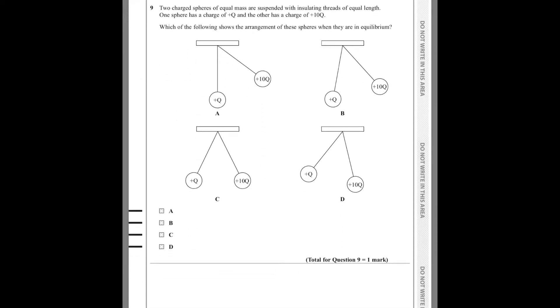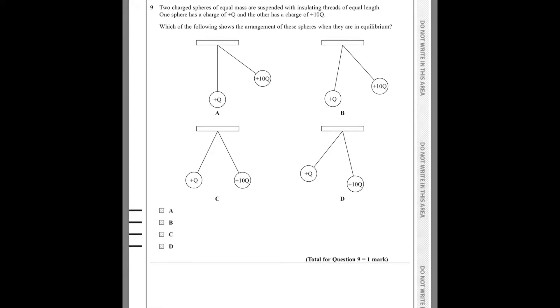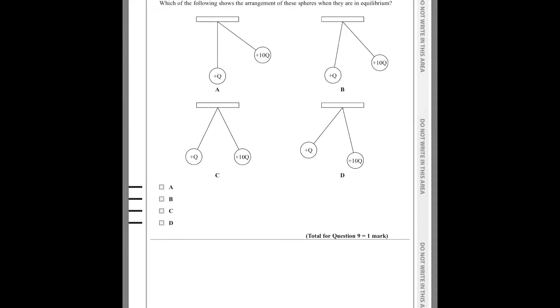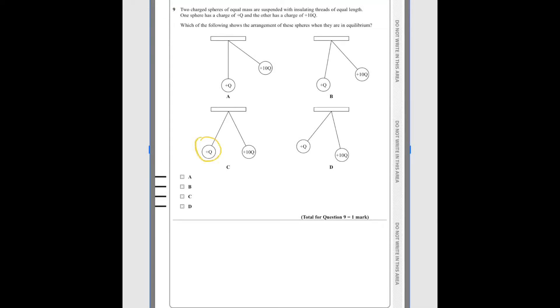Number 9: two charged spheres of equal mass are suspended with insulating thread of equal length. One sphere has a charge of plus q and the other has a charge of plus 10q. Which of the following shows arrangement of the spheres when they are in equilibrium? This is a type of trick question. According to Newton's third law, the two objects will exert equal and opposite force. So whatever the charge is, the distance from the center will always be the same. As I have told, this is according to Newton's third law. So the answer is C.